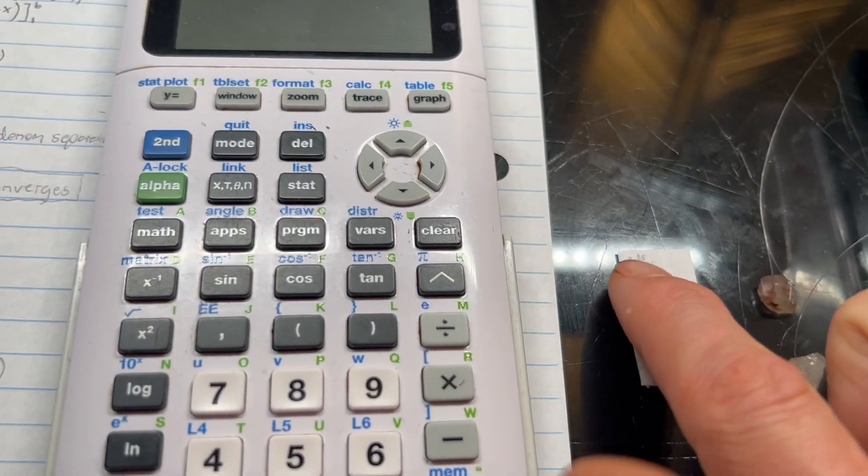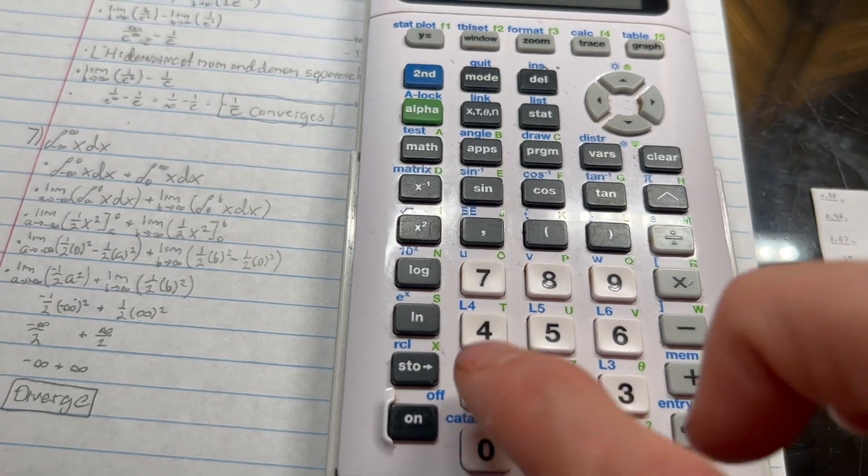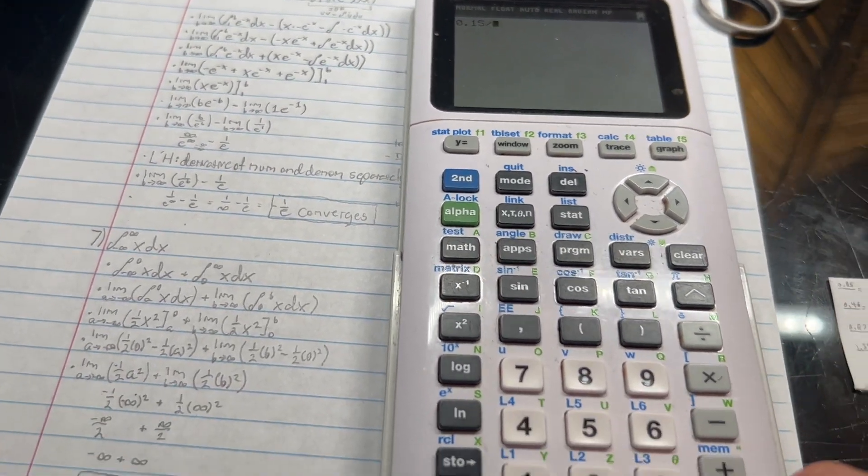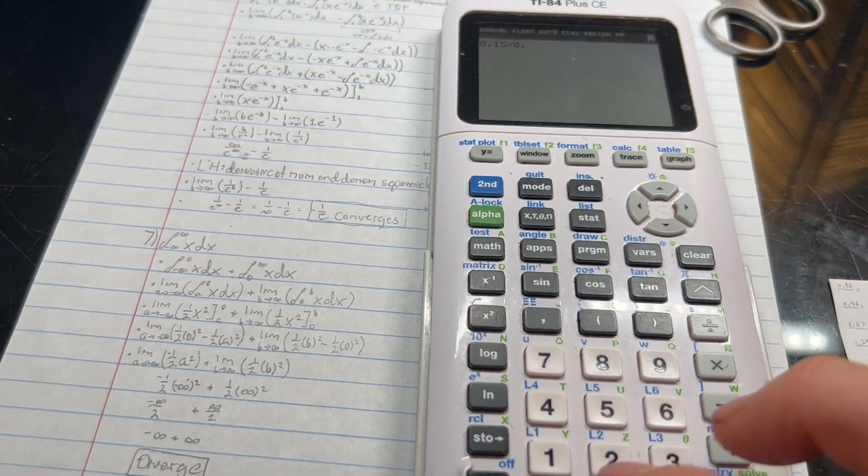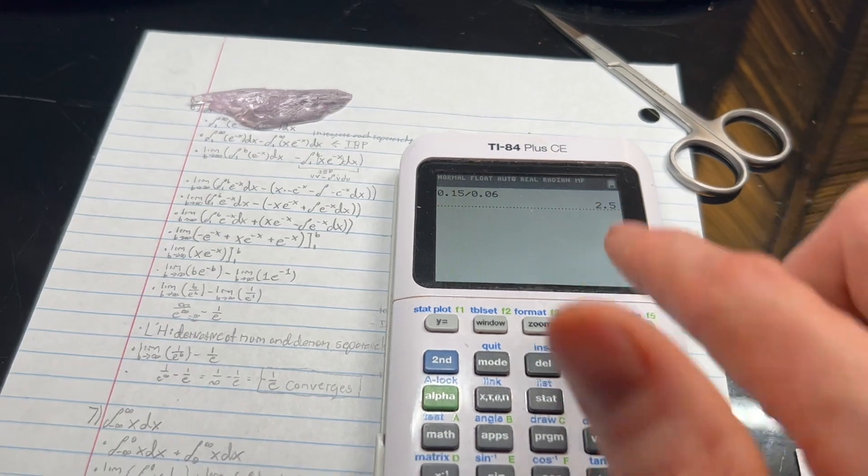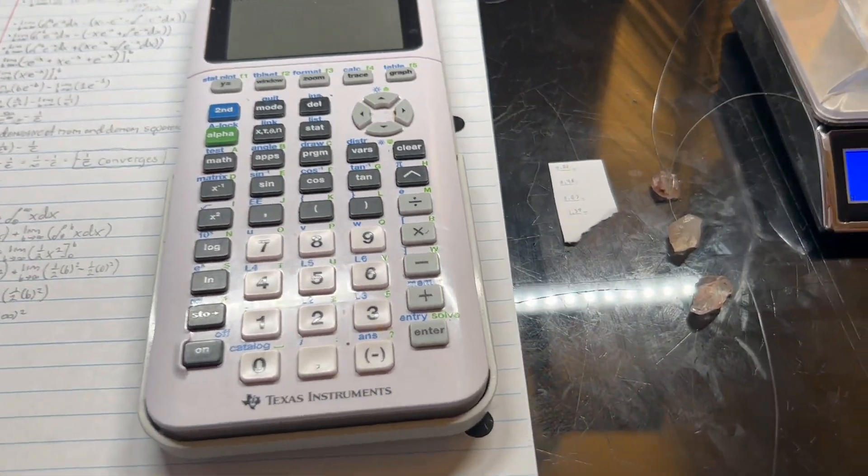So we have its dry weight, 0.15, that I got before attaching the fishing line, and we're going to divide that by the immersed weight, which is 0.06, giving 2.5. Specific gravity of quartz is 2.7. So that's trash.